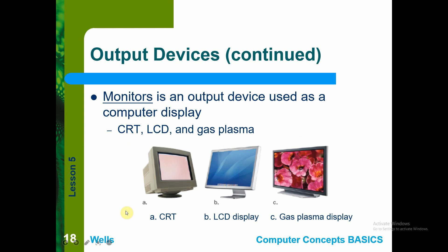The basic example of an output device is the monitor, used to display information and graphics from your computer system unit. Monitor types include CRT, LCD, gas plasma display, and the current LED technology used in modern monitors.